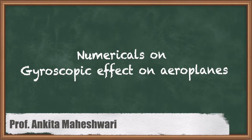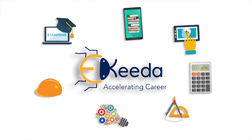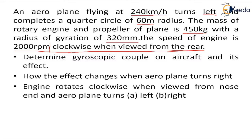Hello everyone. In this video we will discuss a numerical on gyroscopic effects on an aeroplane. The speed of the aeroplane is 240 km per hour and it is turning left, completing a quarter circle of 60 meter radius. The mass of the rotary engine and propeller is 450 kg, radius of gyration is 320 mm, and the speed of the engine is 2000 rpm — clockwise when viewed from rear. This last point is very important: clockwise when viewed from rear.